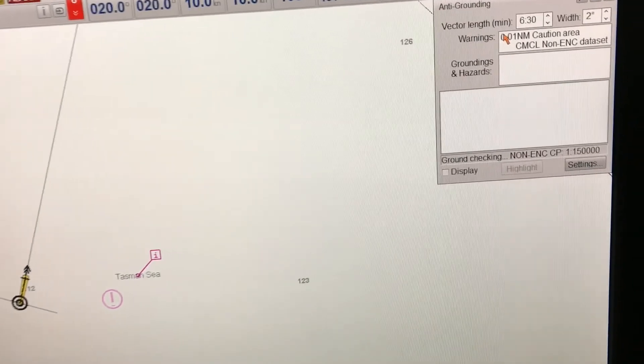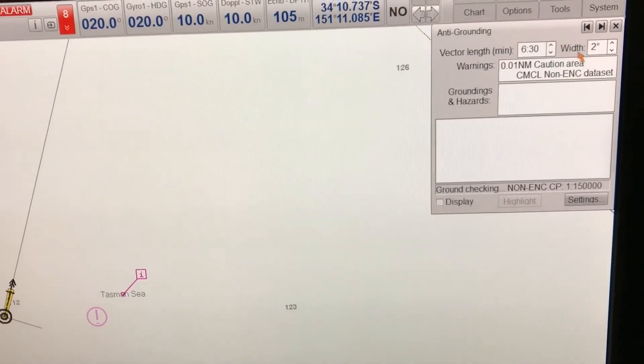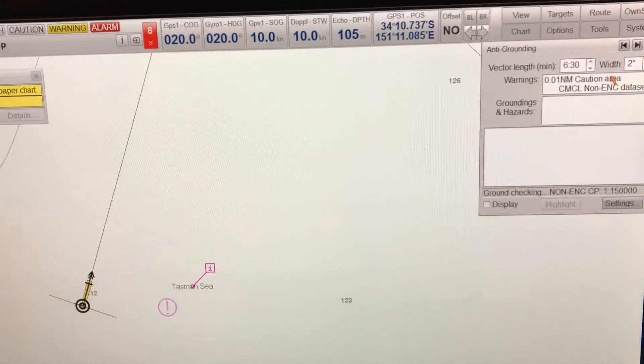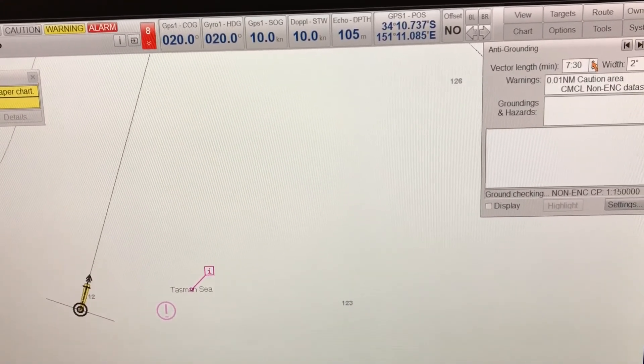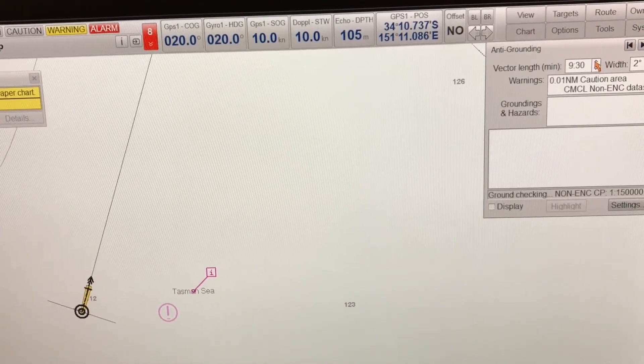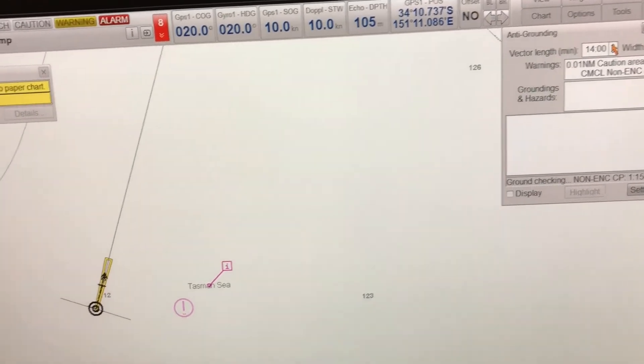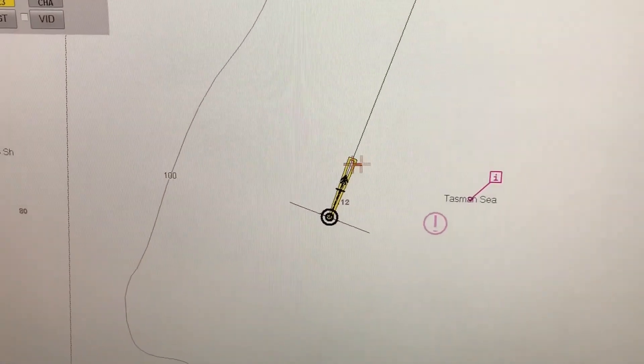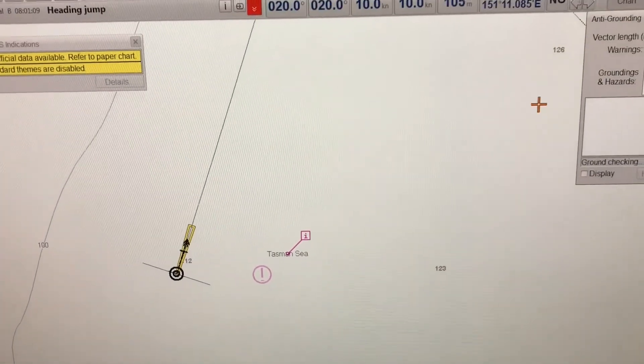So when you go to anti-grounding you have two options available to you. You can increase or decrease the vector length in minutes and you can increase the width in degrees. Vector length in minutes signifies where your ship will be after 10 minutes, so the end of the vector is where your ship will be after the 10 minutes if you set a vector length of 10 minutes.